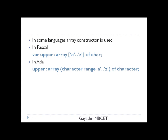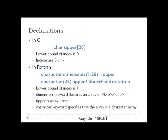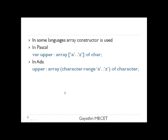These are the different syntaxes followed in different languages. In C, you use 'char upper[20]' with no array keyword. In Fortran also no array keyword is used — just 'character(26) upper'. The default index in C starts from 0, while Fortran's index defaults from 1. Pascal and Ada use the array keyword to declare arrays: 'var upper: array[A..Z] of char' and 'upper: array(character range A..Z) of character'.